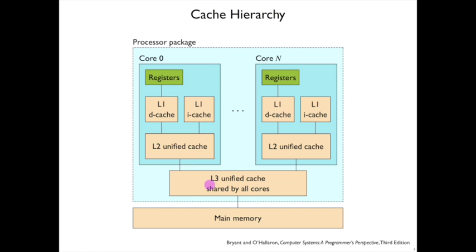The L3 cache is even further away, and in fact it's shared by multiple cores in a single processor. And finally, there's main memory, which is consulted if it's not even in the L3 cache. The reason that there are these layers of caches is that each one has a different cost and capability trade-off.